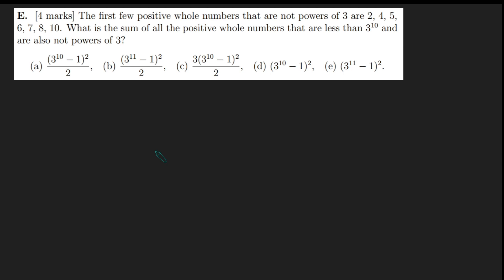So we're adding up all the positive integers less than 3 to the 10 that are not powers of 3. Which of the following five options is it? Okay, let's just dive straight into a solution here.